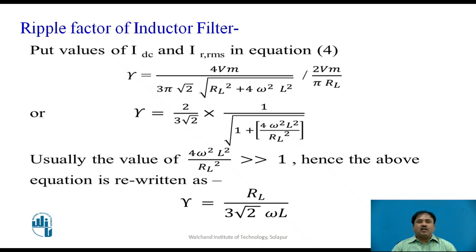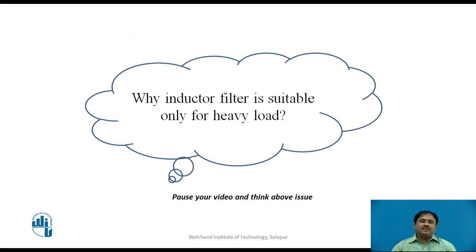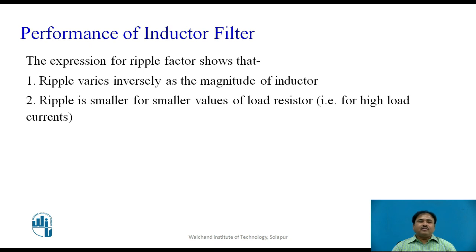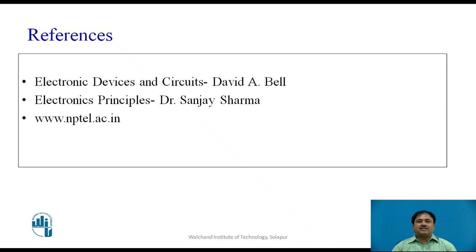This ripple factor expression shows the performance of the inductor filter. Think about why we use the inductor filter only for heavy loads. From the equation, ripple is inversely proportional to the inductor value. Secondly, ripple is always smaller when the load resistance is smaller — meaning heavier loads. I hope you understand the performance of the inductor filter and the derivation of the ripple factor. Thank you for watching the video.